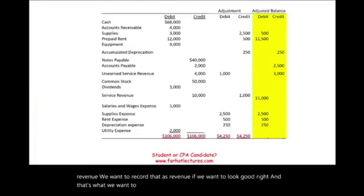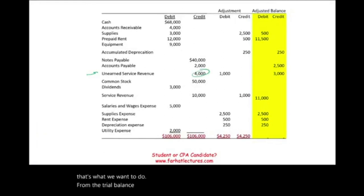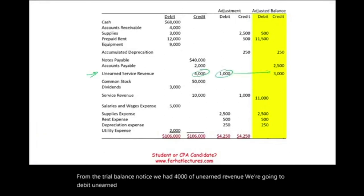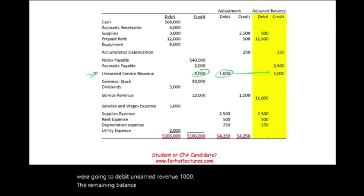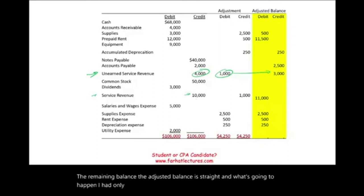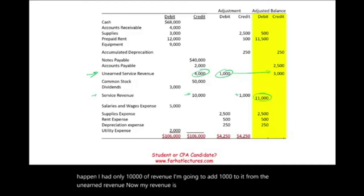From the trial balance: unearned revenue was $4,000; we debited it $1,000, leaving an adjusted balance of $3,000. Revenue was $10,000; we added $1,000 from the unearned revenue recognition, bringing revenue to $11,000.